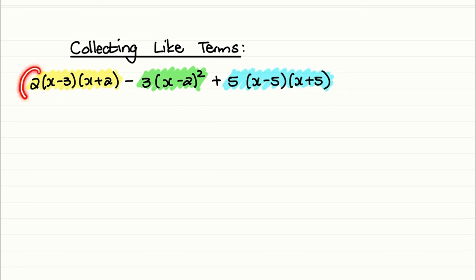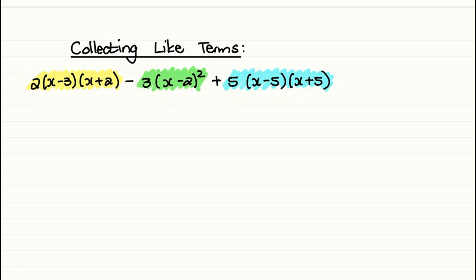A common mistake that people make is to multiply this coefficient in with every bracket. And they do the same in the middle term, and they do the same at the end. Now this is a common mistake which we want to avoid.